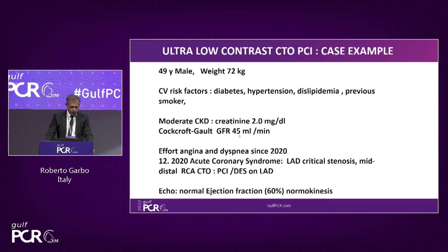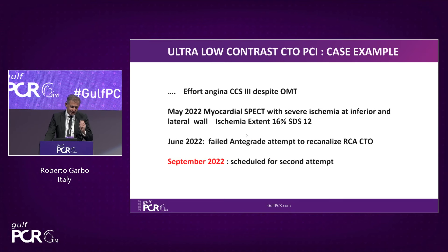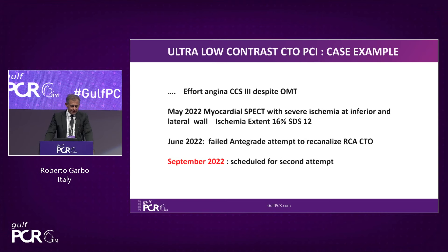In December two years ago, he had an ACS with critical LAD stenosis and mid-distal right coronary occlusion, treated in another center with PCI on the LAD. Ejection fraction was 60%. He continued to have effort angina, so a myocardial scintigraphy was performed showing severe ischemia in the inferior and lateral wall, extent 16%, SDS 12. In June 2022 at that center, they attempted to open the right coronary antegradely but completely failed, and sent him two months later for a new scheduled reattempt.